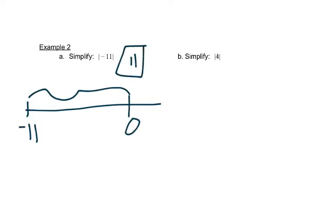So if we look at a, this is the absolute value of negative eleven. So it's really asking, how far is negative eleven from zero? What's the distance? It's eleven units away, so the absolute value of negative eleven is eleven.